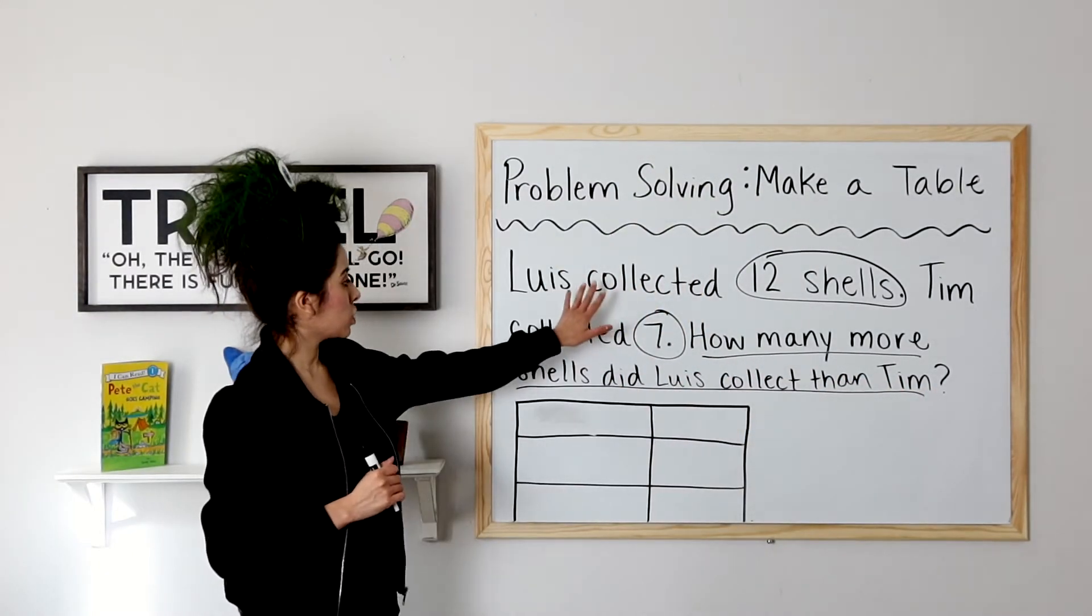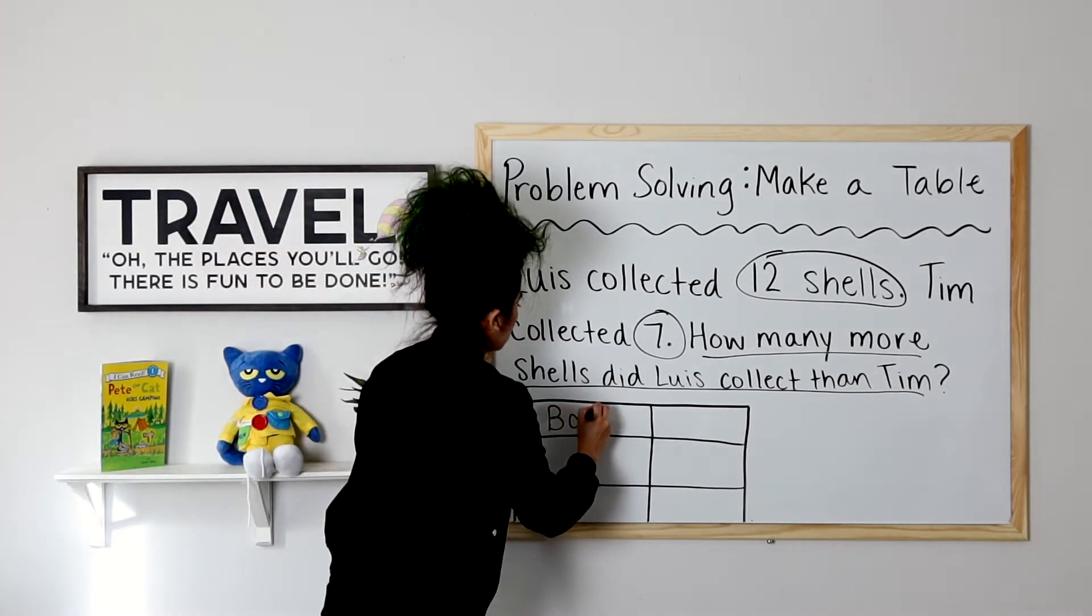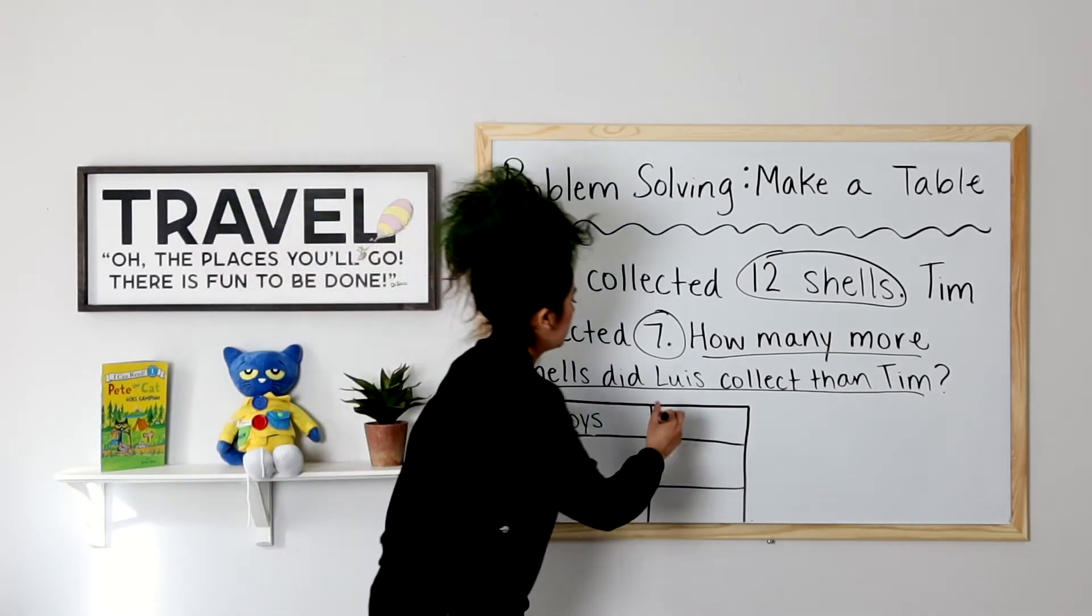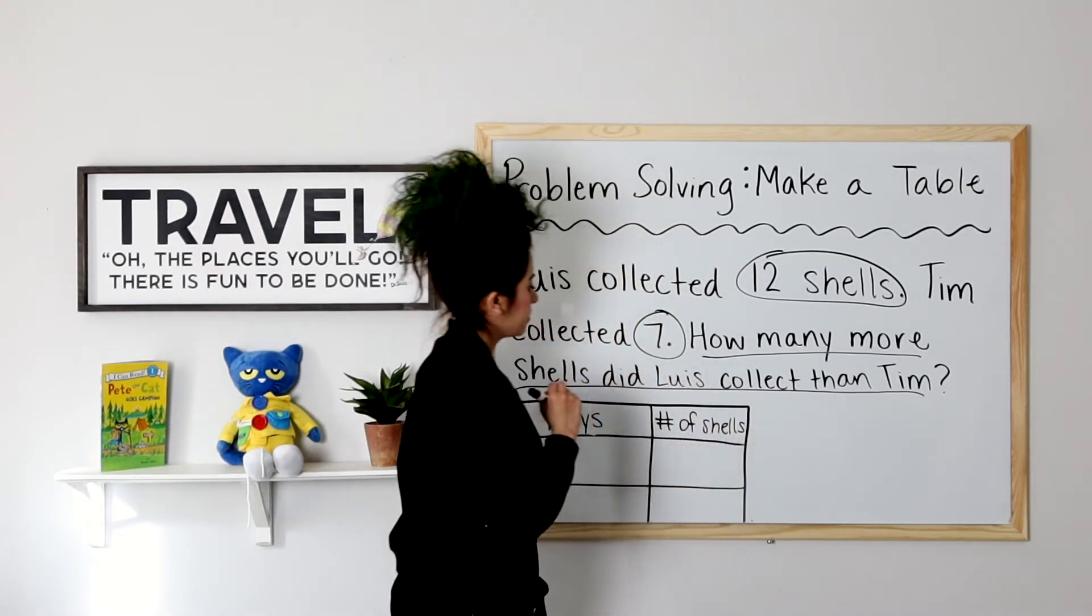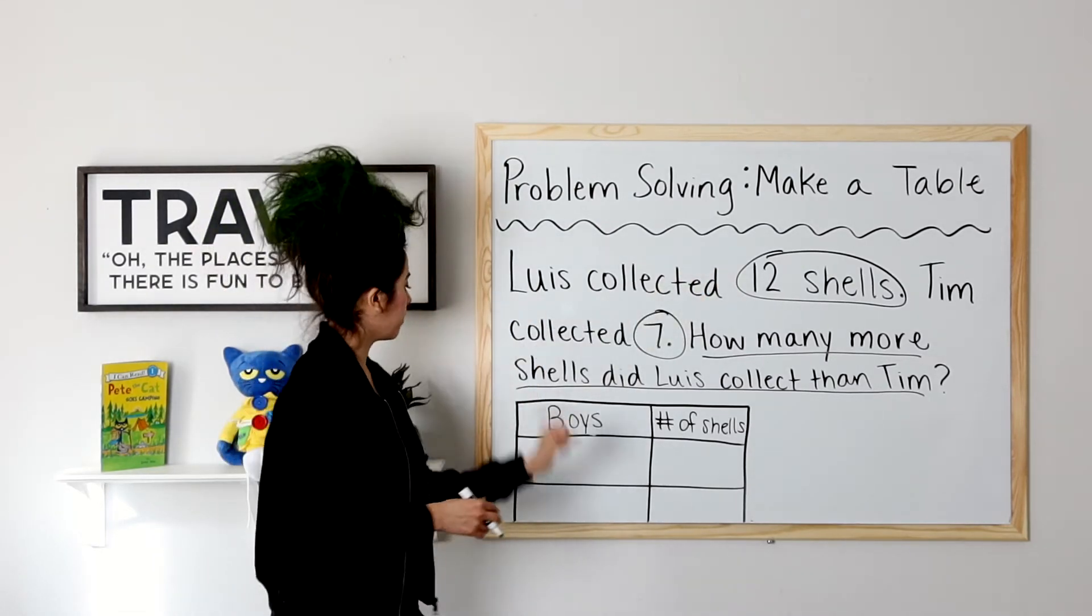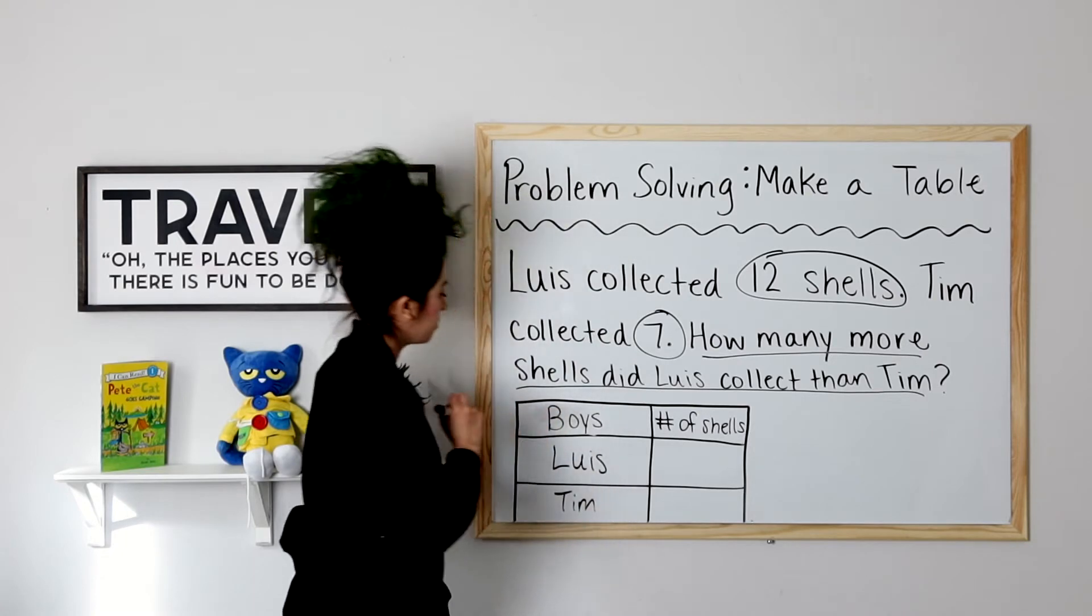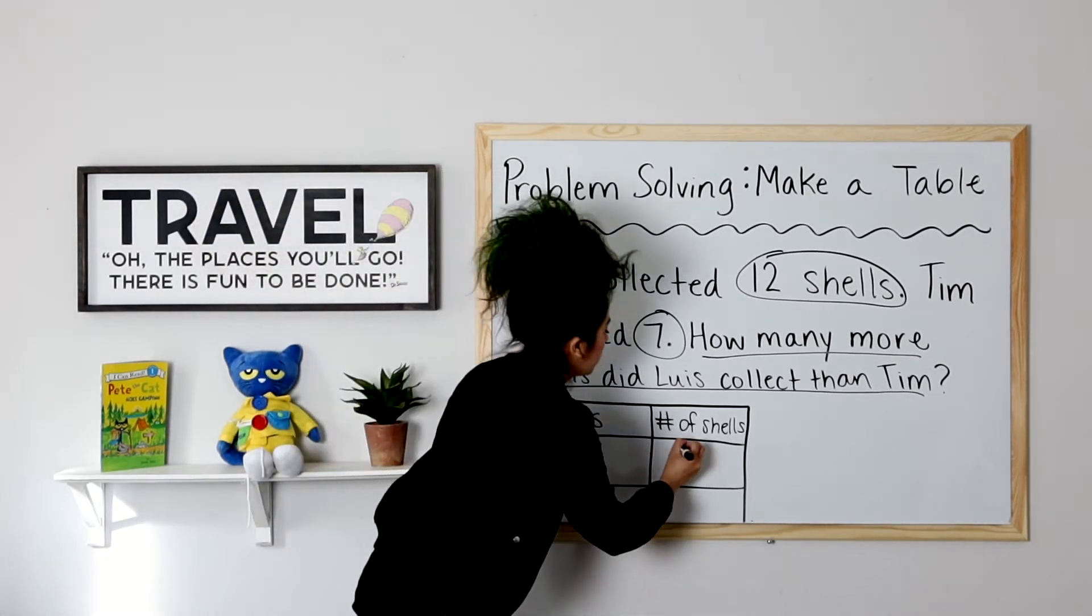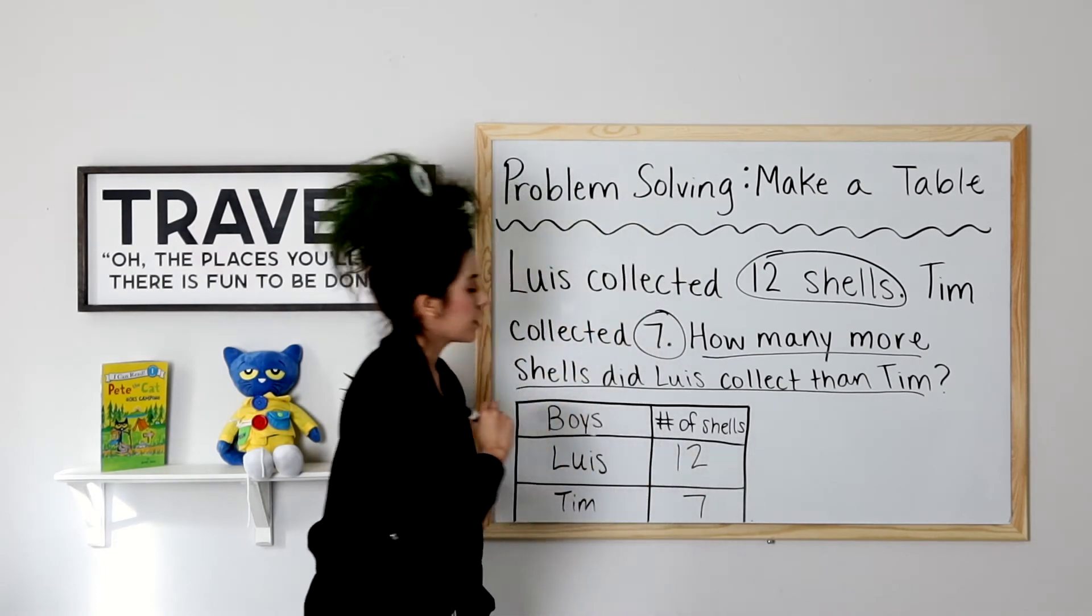Fourth step, I will take the information I have and make a table with it. So I have two boys and I also know the number of shells that they collected. Number of shells. So who are the two boys? We have Lewis and Tim. How many shells did Lewis collect? Twelve. How many did Tim collect? Seven. Very good.